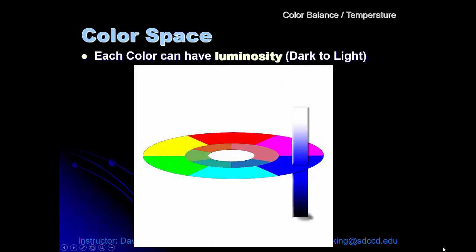So if we turn this color wheel sideways, what we realize is that each color, and in this case blue, also can have a luminosity rating. The color wheel shows it at its most pure color.